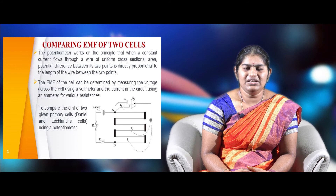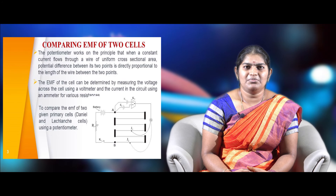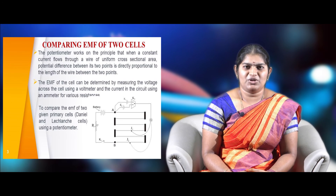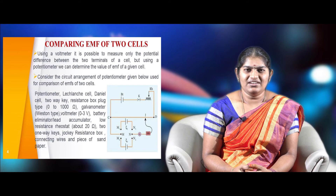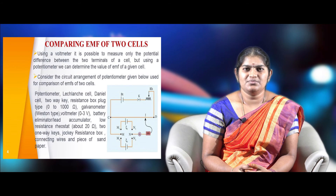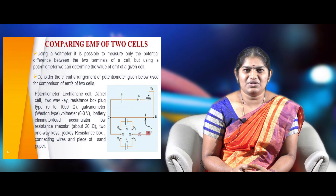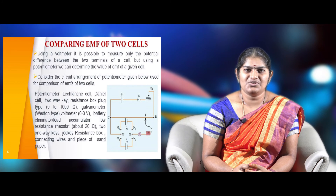The EMF of a cell can be determined by measuring voltage across it using a voltmeter, and current can be measured using an ammeter. Using a potentiometer to compare the EMF of two cells can be done using a Leclanche cell and a Daniel cell. While a voltmeter can measure the potential difference between terminals, a potentiometer can measure the actual EMF of two given cells. Consider the circuit arrangement shown in the diagram below, which helps determine the comparison of the two EMFs.